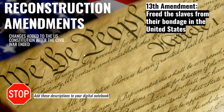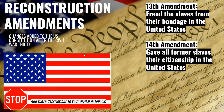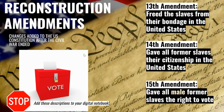There are three Reconstruction Amendments — three changes to the Constitution passed during this time period. The first officially ends slavery. The 14th Amendment gives all former enslaved people citizenship in the United States, meaning they now have the rights of a U.S. citizen. The 15th Amendment gave all male former slaves the right of suffrage — the right to vote. Go ahead and add all three of these amendments to your digital notebook.